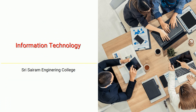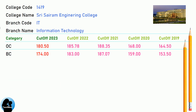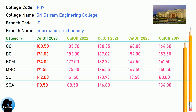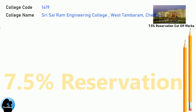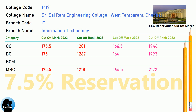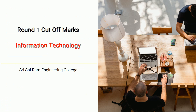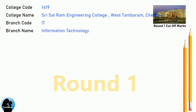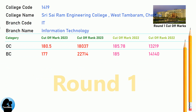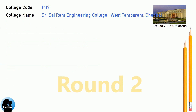DNA Cut-off for Shri Sai Ram Engineering College in Information Technology. DNA 7.5 Reservation Cut-off for Shri Sai Ram Engineering College in Information Technology. DNA Round 1 Cut-off for Shri Sai Ram Engineering College in Information Technology. DNA Round 2 Cut-off for Shri Sai Ram Engineering College in Information Technology.